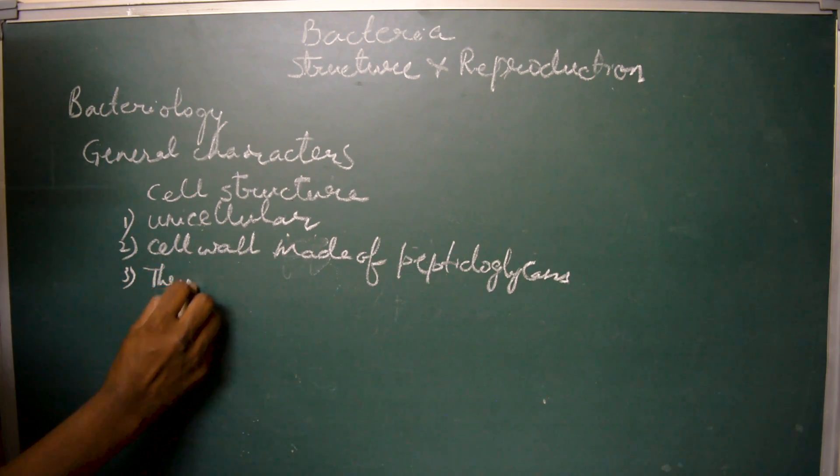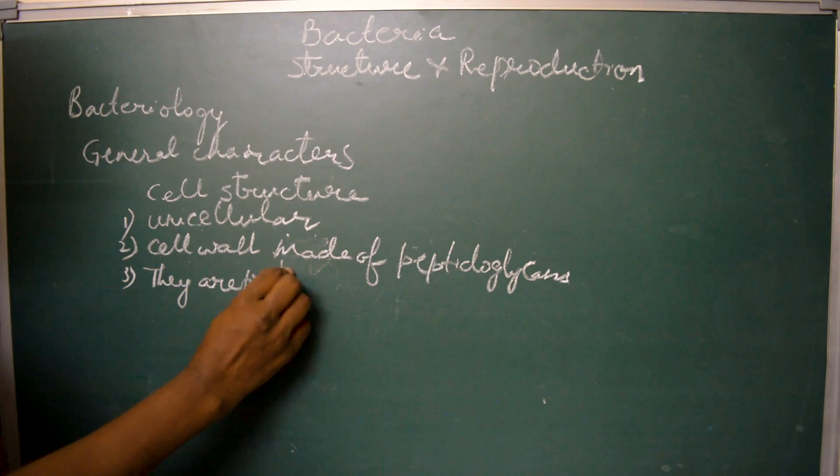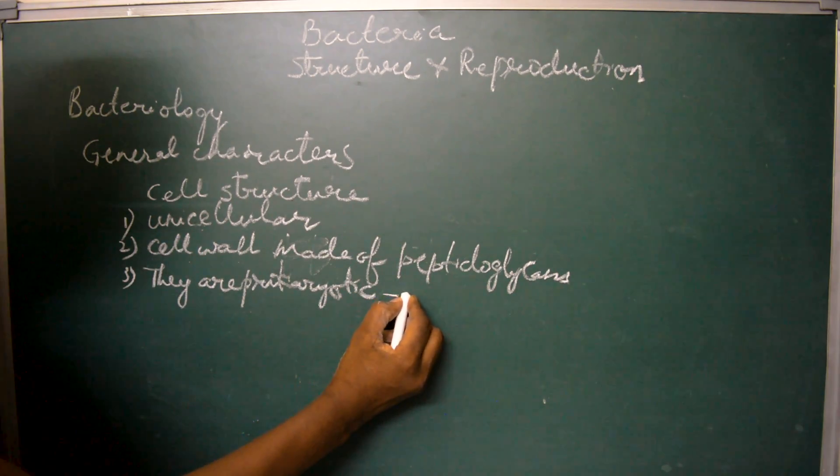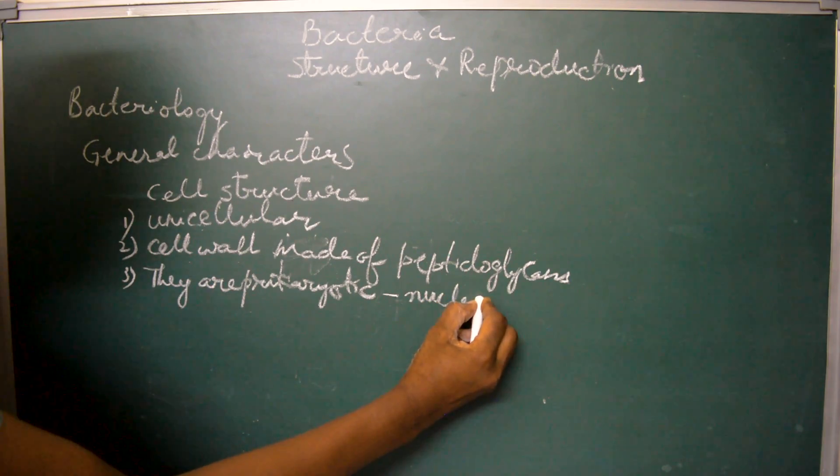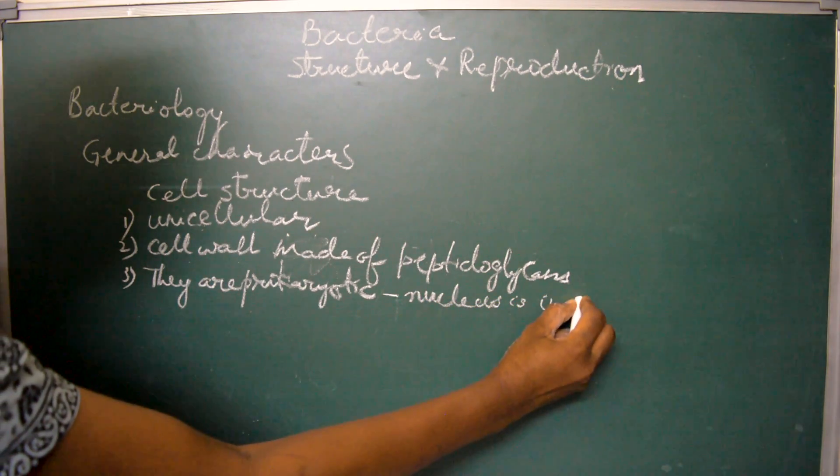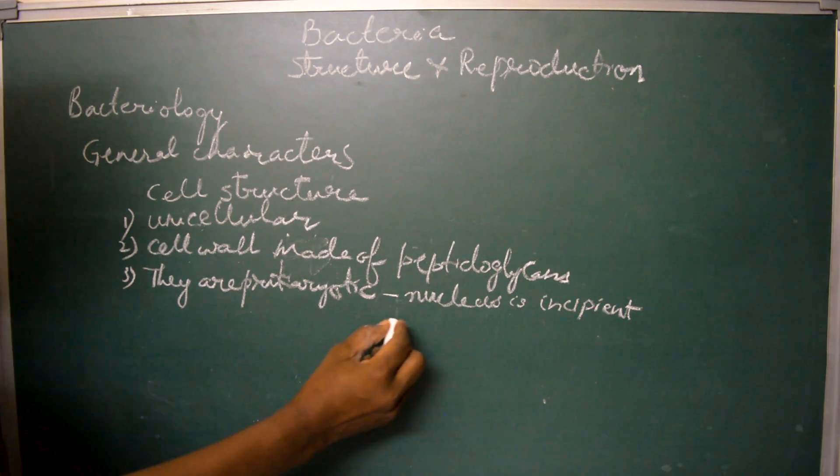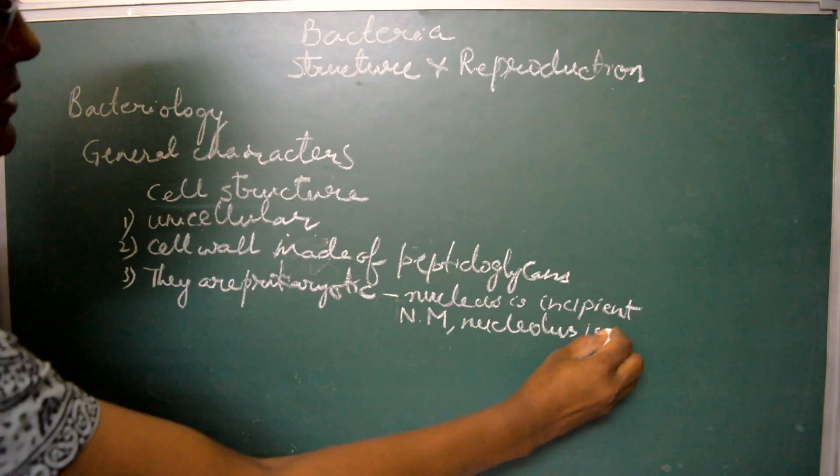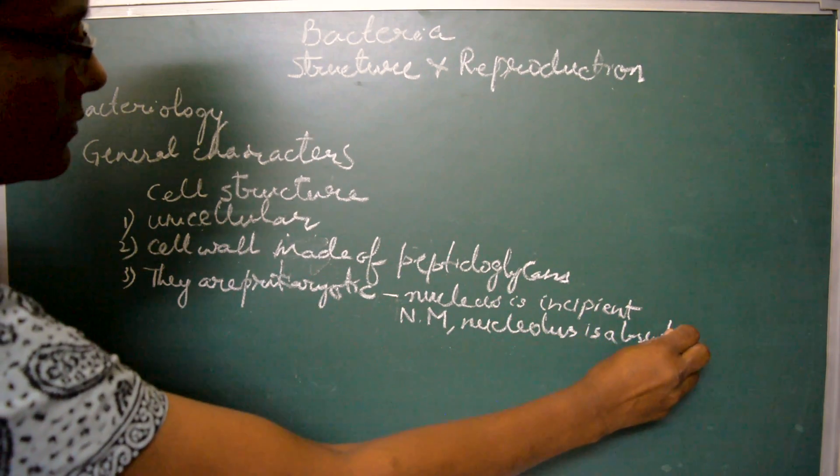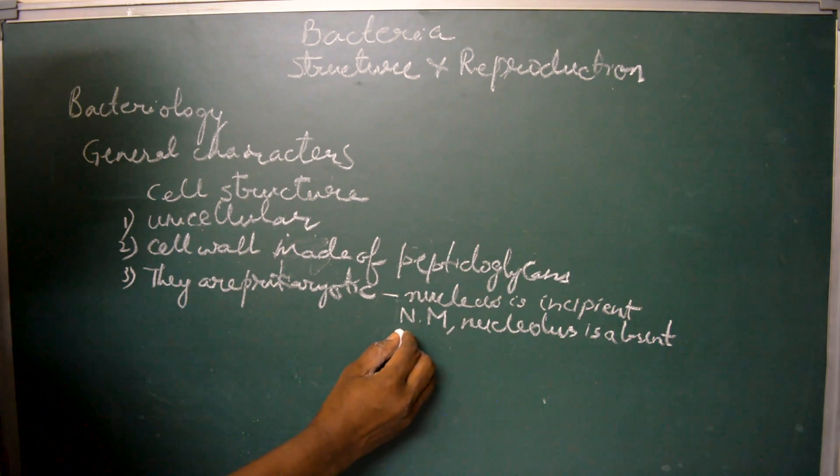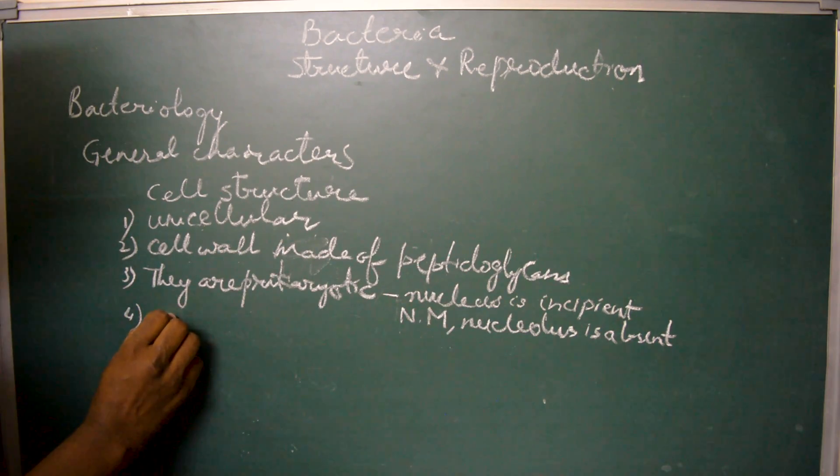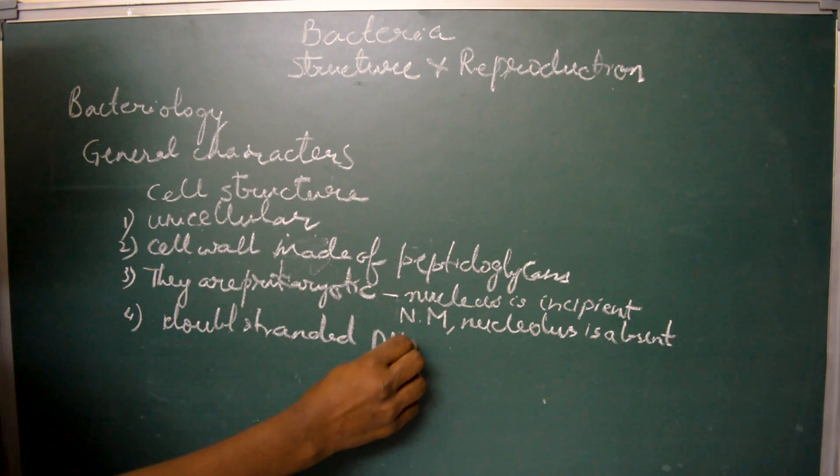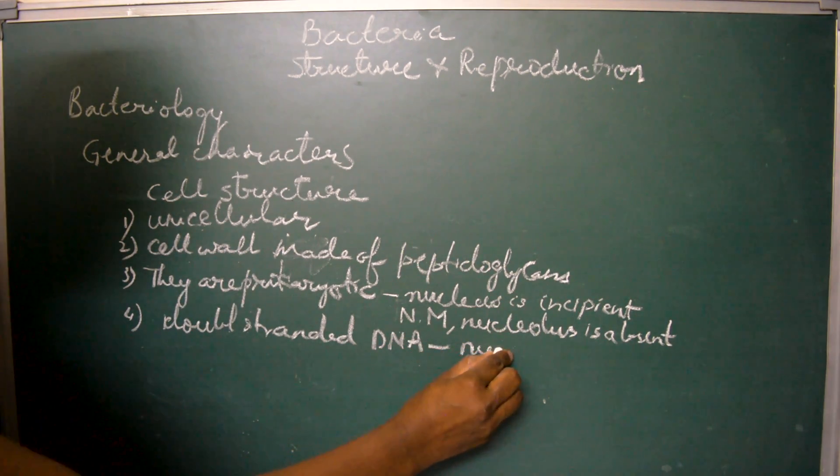The cell wall of bacterial cell is made of peptidoglycans. They are prokaryotic because they do not show a well-defined nucleus, or nucleus is incipient, that is the nuclear membrane and the nucleolus is absent. The genetic material is represented as a double-stranded DNA which is called a nucleoid.